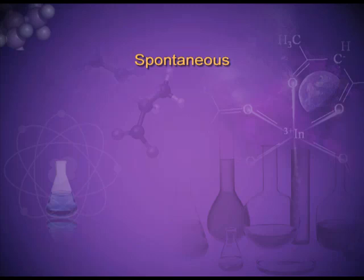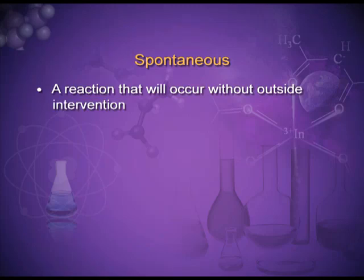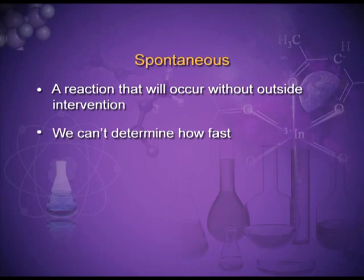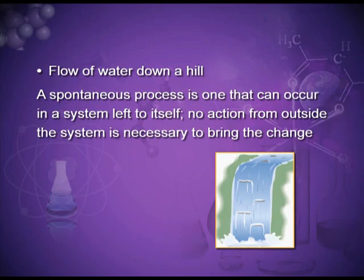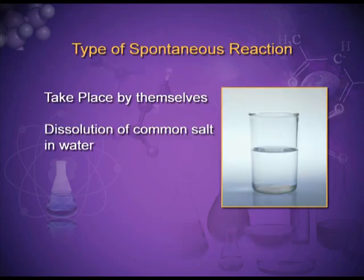A spontaneous process is a reaction that will occur without outside intervention, though we cannot determine how fast. The flow of water down a hill is a spontaneous process, but the reverse needs an external agency. These processes take place by themselves. For example, if we put sugar in a glass of water, it automatically dissolves — but the reverse, dissolved sugar forming a lump again, we cannot expect.